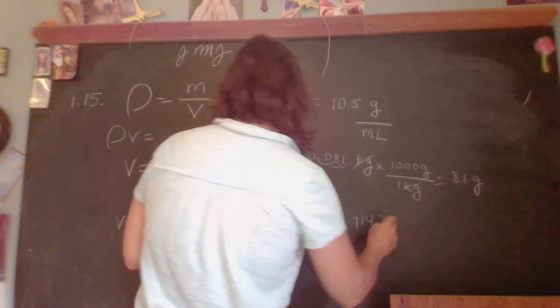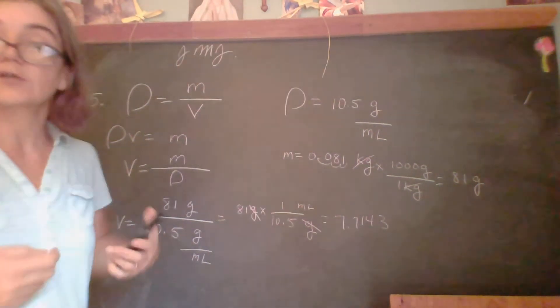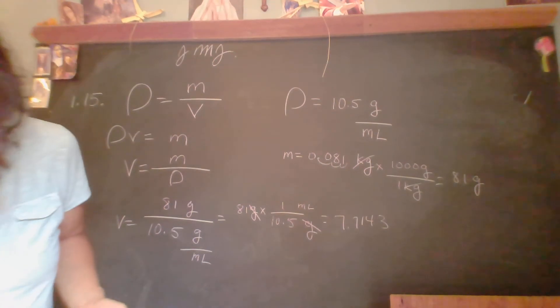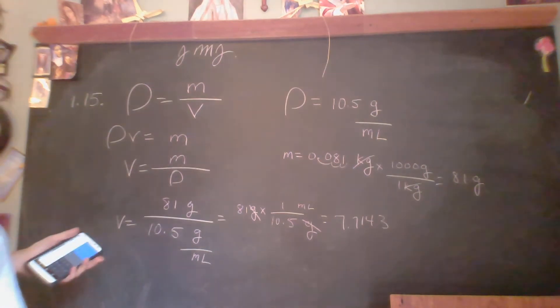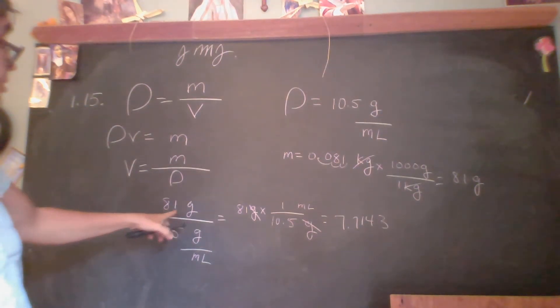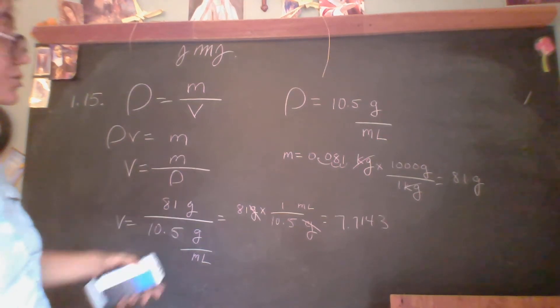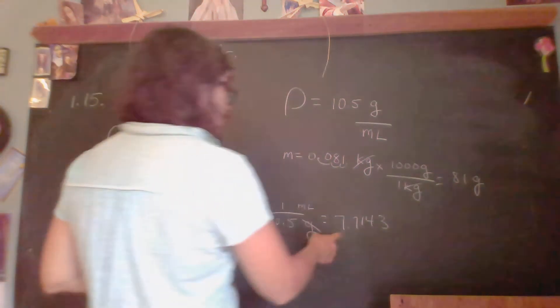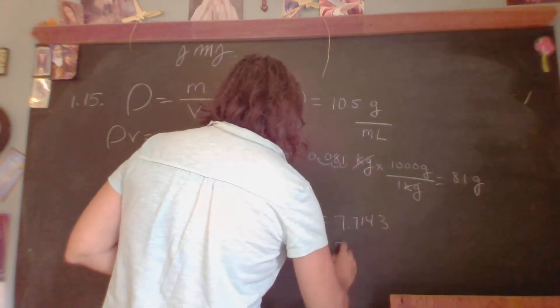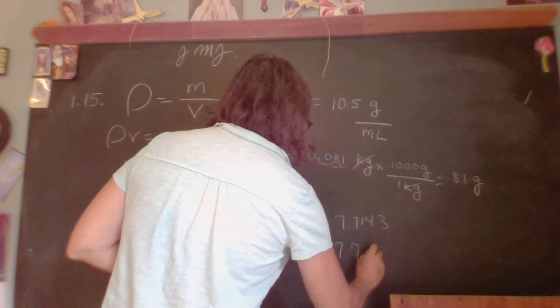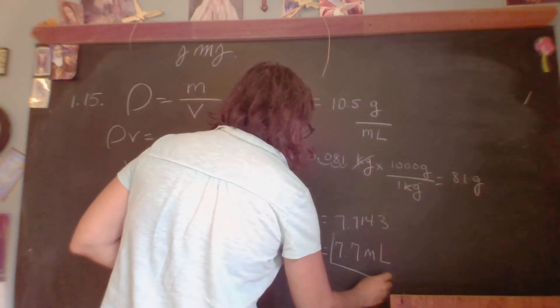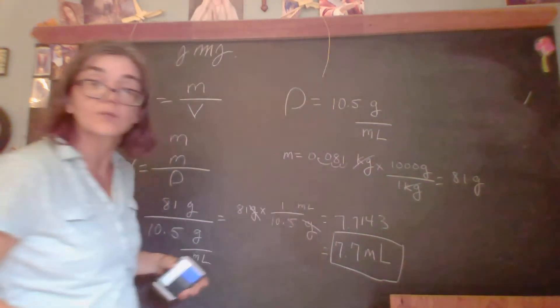So here's where our significant digits are going to start coming into play. So this has two significant digits. This has three. Our answer should have no more than two significant digits. So we're going to say 7.7 milliliters.